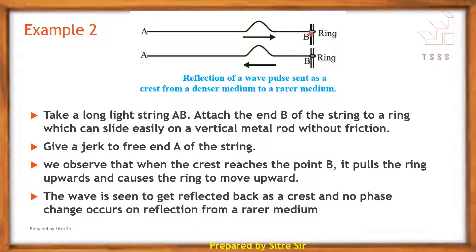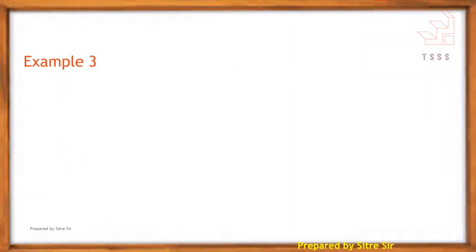If a wave is incident on a rare (less dense) medium, the crest is reflected back as a crest and there is no phase change. This is the case of reflection from a rare medium — there is no phase change in the incident wave.